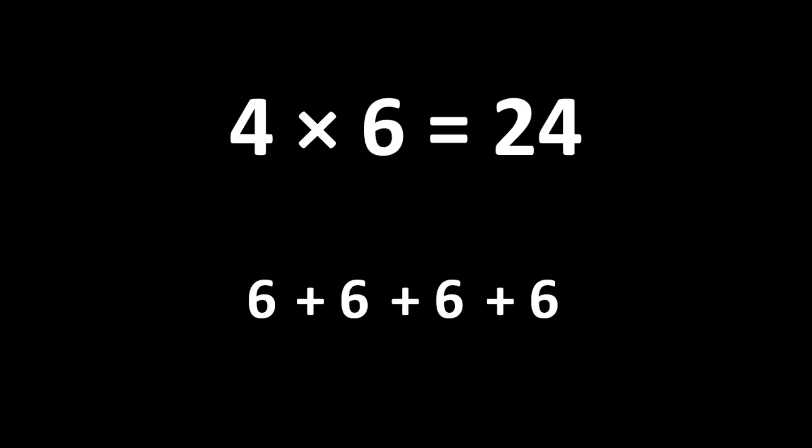We can also break 24 apart into 4 groups of 6, just like this. When we put 4 groups of 6 together, the total is 24. So we can think of 4 times 6 as 4 groups of 6. You may recognize this as repeated addition. If we count the groups of 6, we can see that there are 1, 2, 3, 4 groups of 6, and the total is 24.